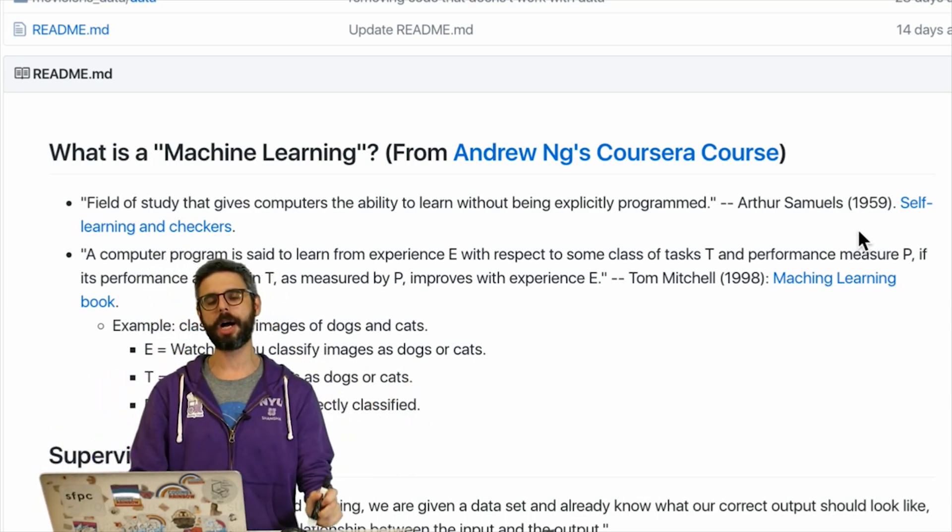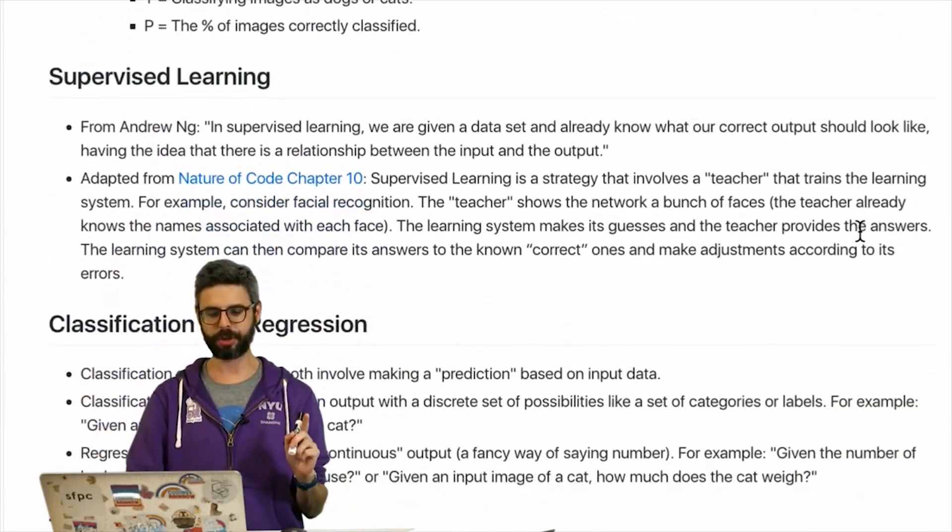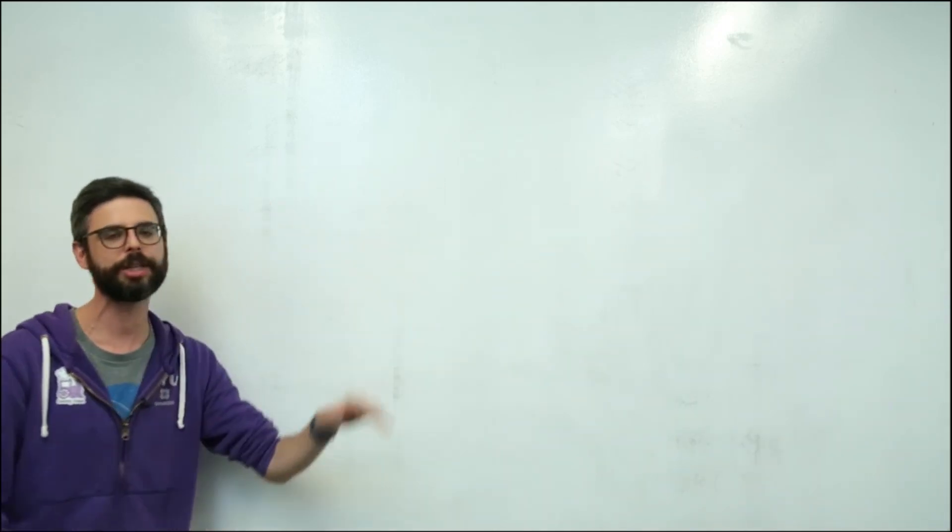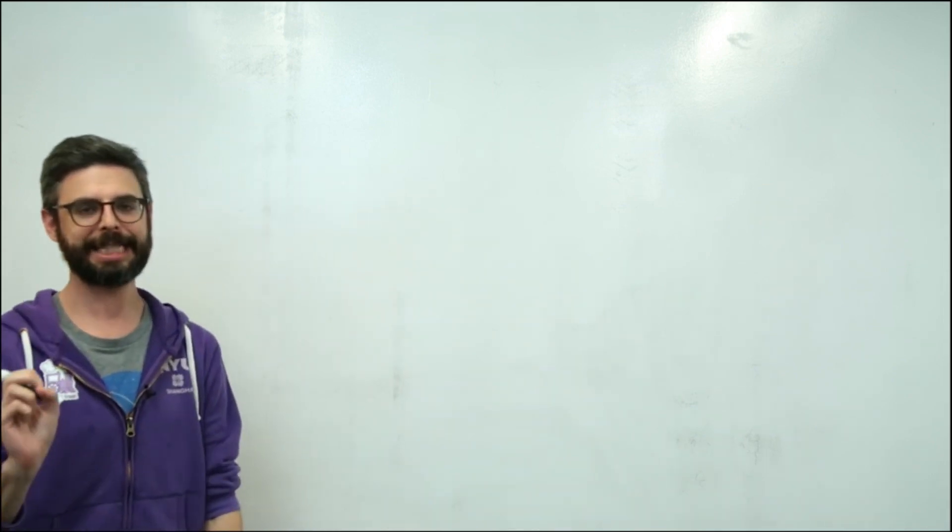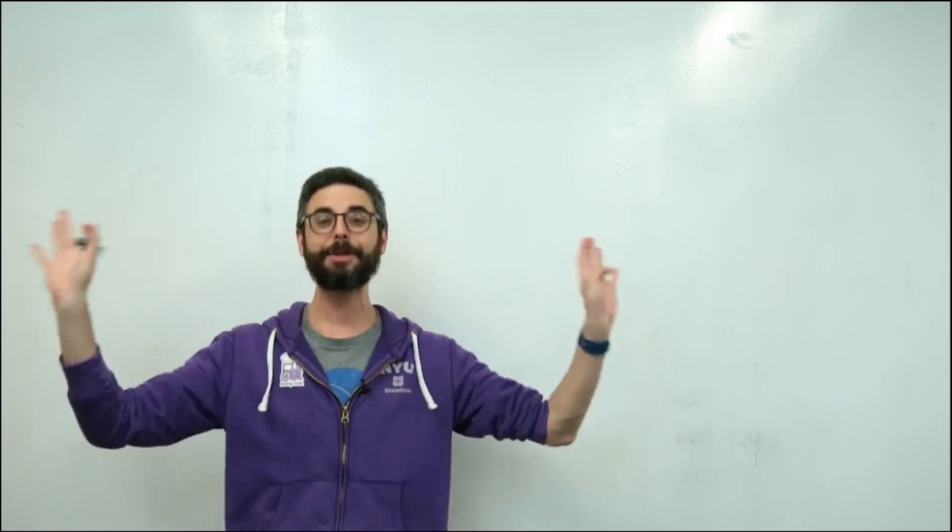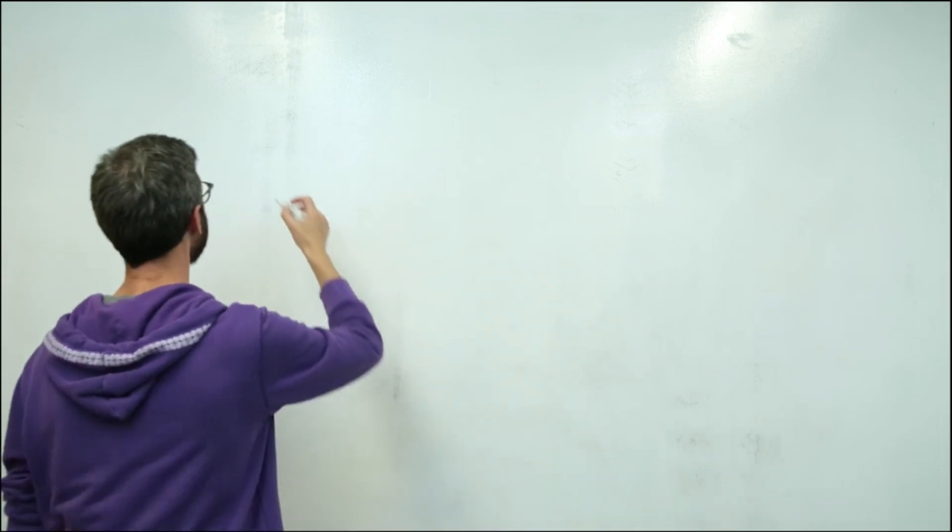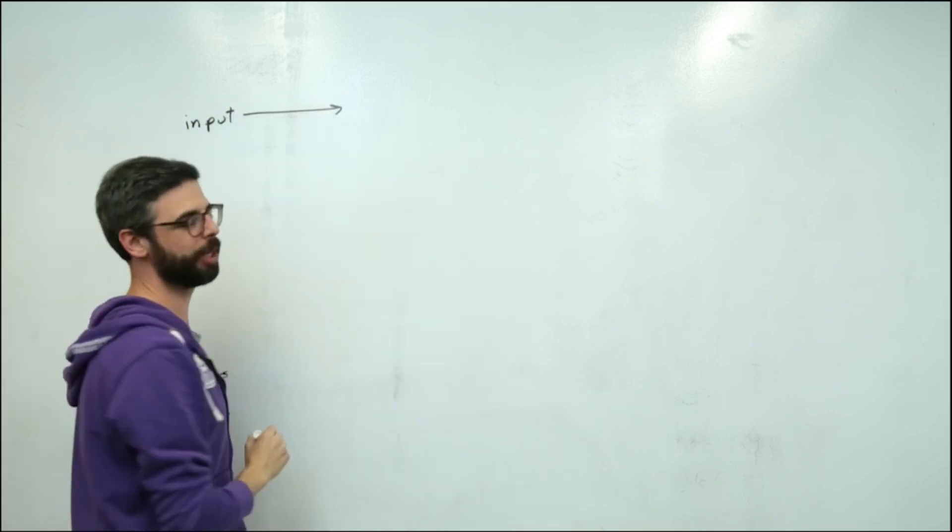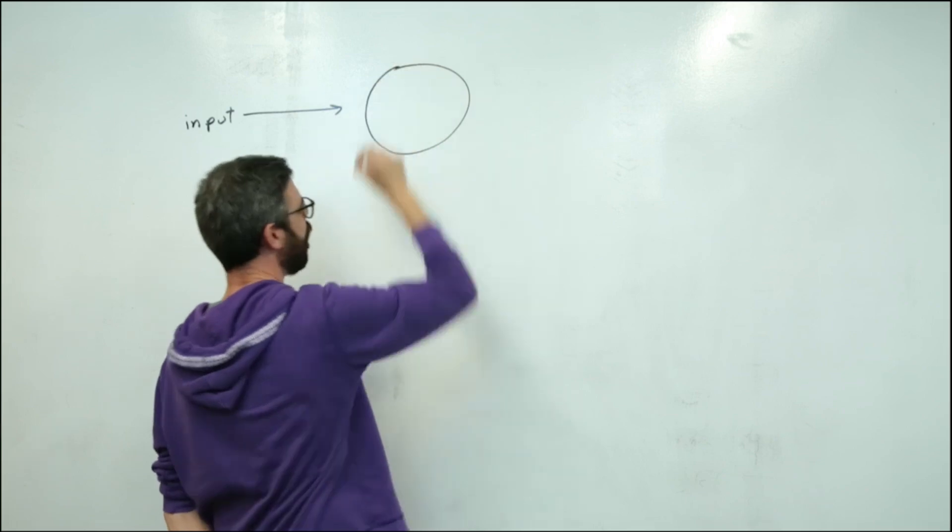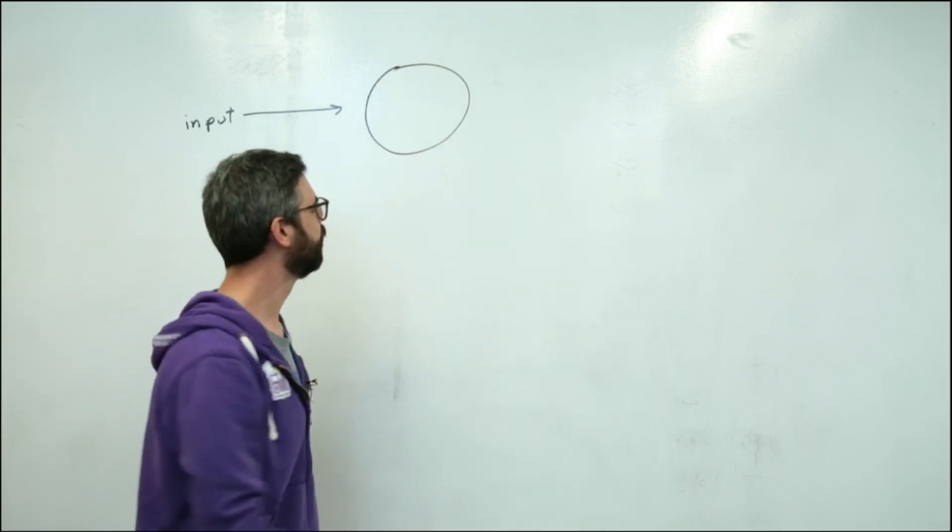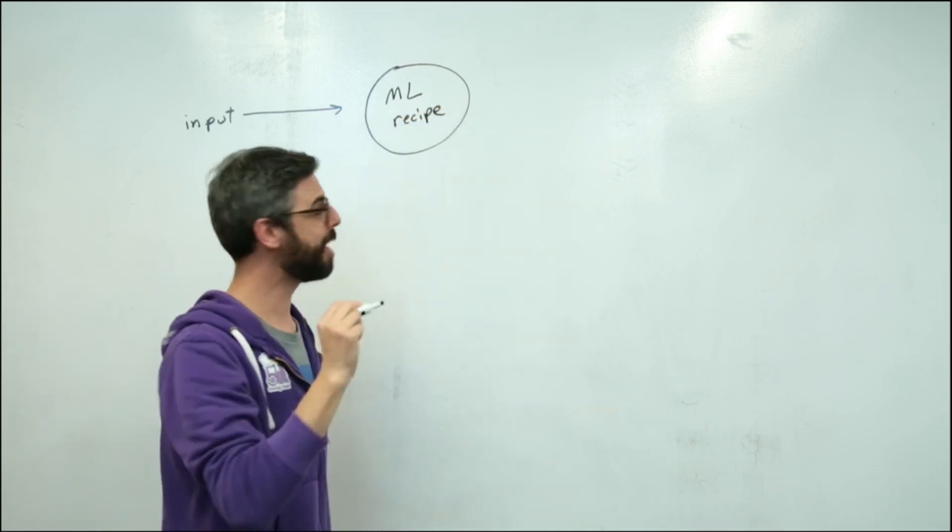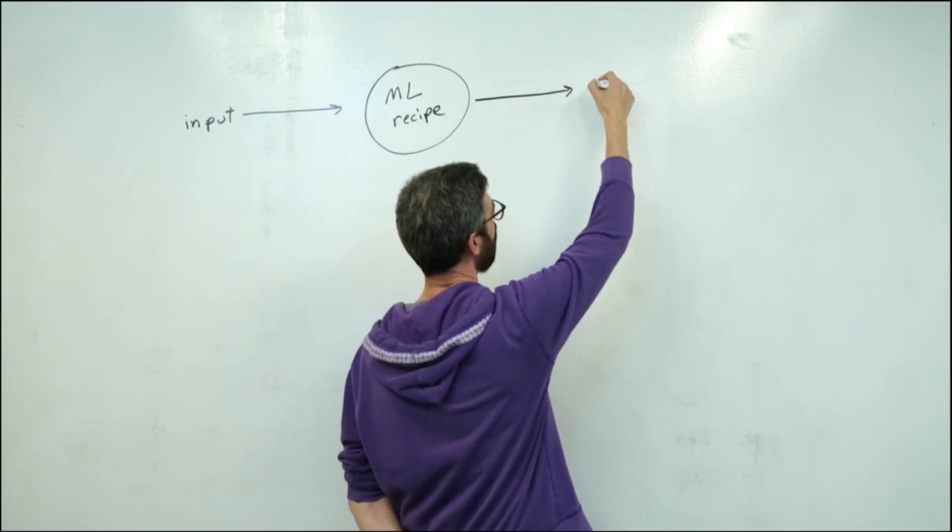So let me come over to the whiteboard here. I have this ReadMe that I'll link to in the description. You can read some of the definitions and information that's on that ReadMe. But what I want to look at is this model for machine learning in this particular way. So there is some sort of input. That input is going to go into some sort of algorithm, some recipe. I think that's a nice way of thinking about it. Some machine learning recipe. And then out of that machine learning recipe, we are going to get an output.